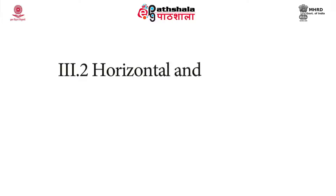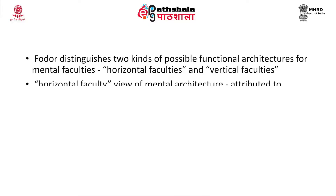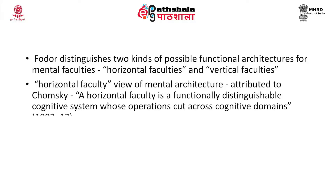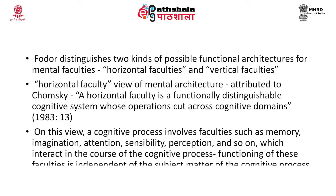Now let us move to horizontal and vertical faculties. Fodor distinguished between two kinds of possible functional architectures for mental faculties. A horizontal faculty, attributed to the faculty view, is a functionally distinguishable cognitive system whose operations cut across cognitive domains. From this view, a cognitive process involves faculties such as memory, imagination, attention, sensibility, and perception, which interact in the course of cognitive processes.